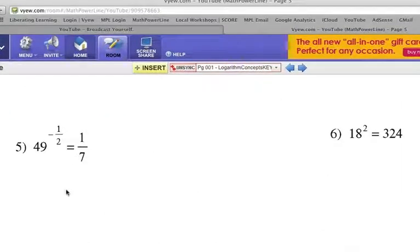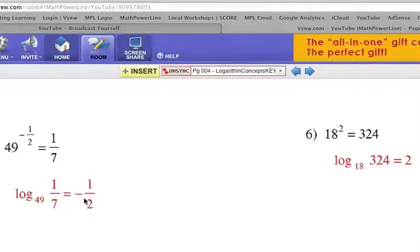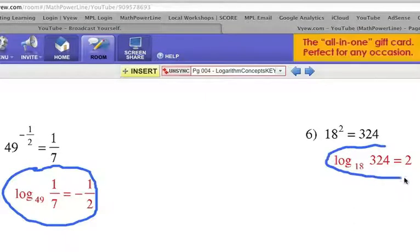Finally, examples 5 and 6. Give those a try. Number five: where's the base? 49. We write log base 49 of one-seventh equals the exponent. Base, answer, exponent. Don't let the fractions fool you. 49 to the what power is one-seventh? The answer is negative one-half power. I know it's confusing with fractions, but remember the format and where everything goes. Here, 18 squared equals 324. The base is 18, so 18 to the what power is 324? 2. Remember, the logarithm is the exponent. If you can think backwards like that and put the numbers in the proper spot, you've got it.